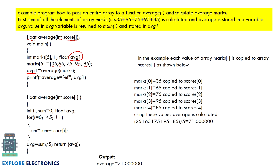To call this function, we write: average1 = average(marks). Here, average is the function name we are calling, and marks is the parameter — meaning we are sending the entire array, not element by element. After the result is computed inside the function, it will be returned to the variable average1.